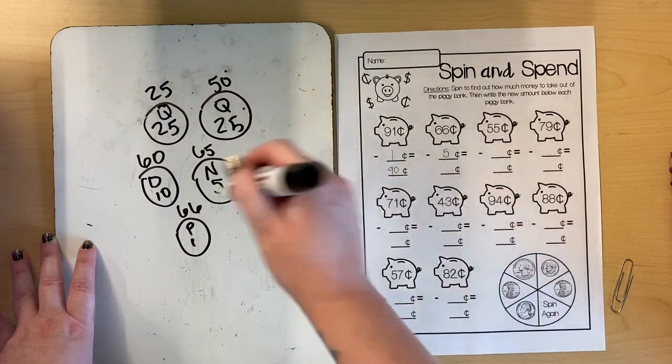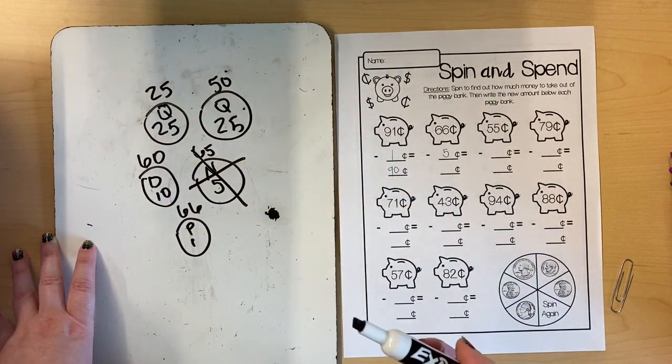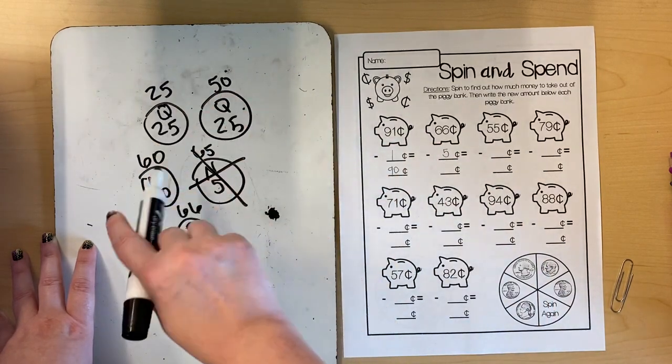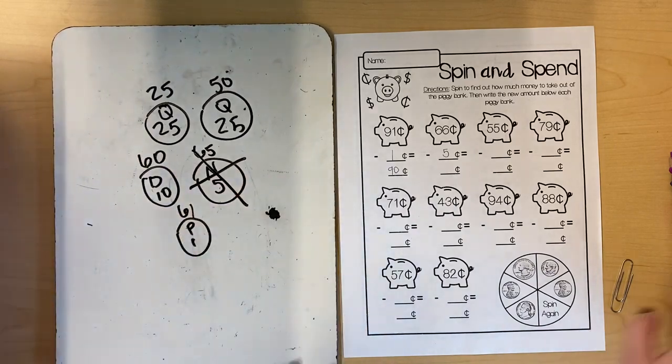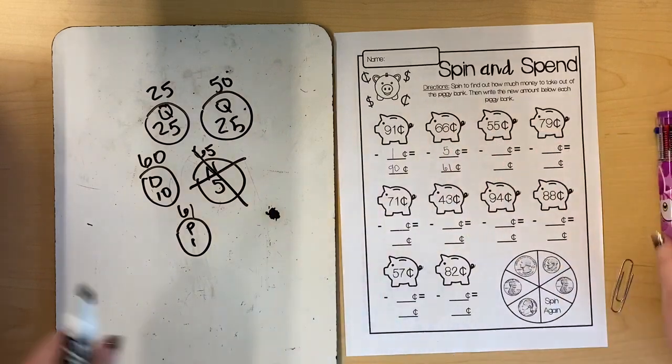I need to take away 5 cents so I'm gonna get rid of my nickel and see how much I have left. 50, 60, this would be 61. So I have 61 cents left.